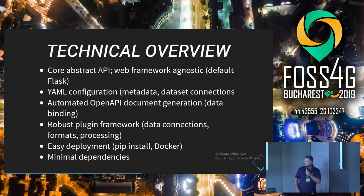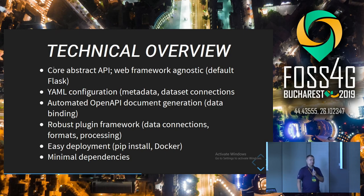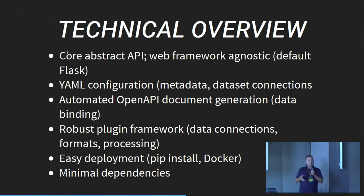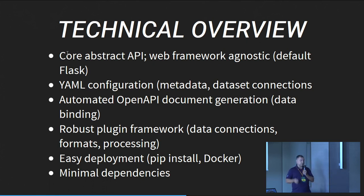It's easy to deploy — you can do it through pip or Docker. It's on the UbuntuGIS unstable line now, thanks to Angelos, and it has minimal dependencies, so it can be very simple or more complex as needed. The idea follows the design pattern of what's going on at OGC: core and extension. It shouldn't take very long to stand up a basic PyGeoAPI to serve out your features in accordance with the core spec.